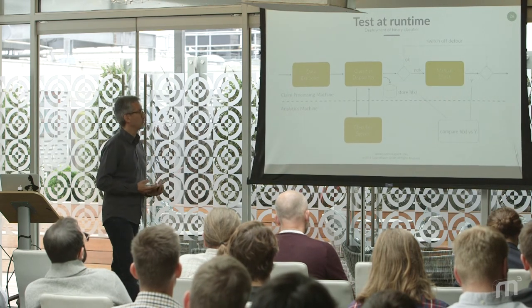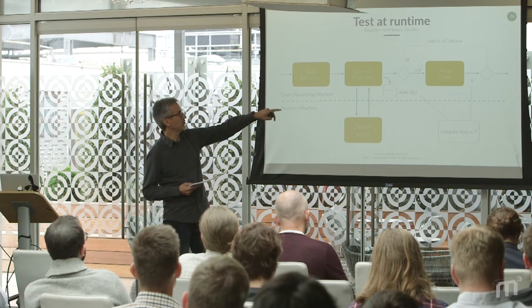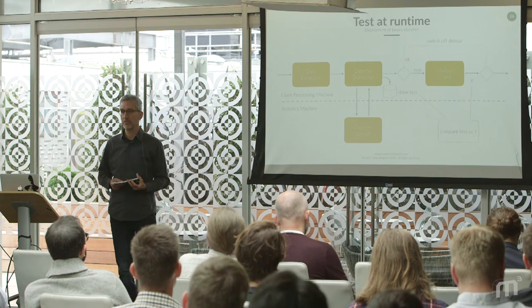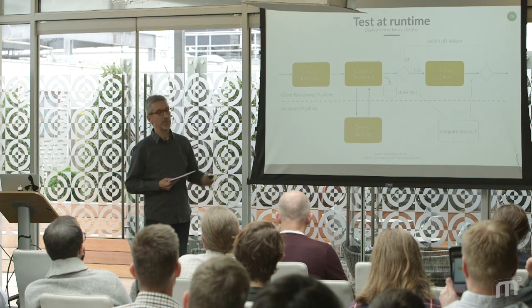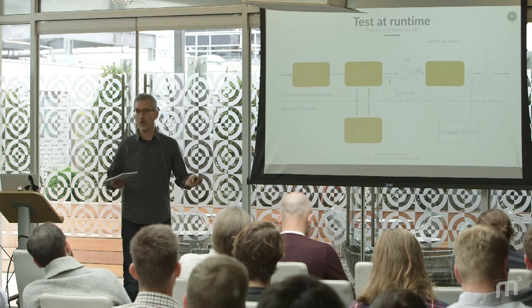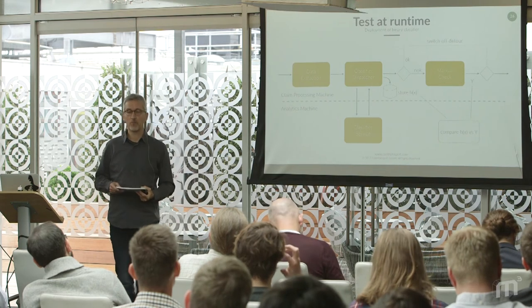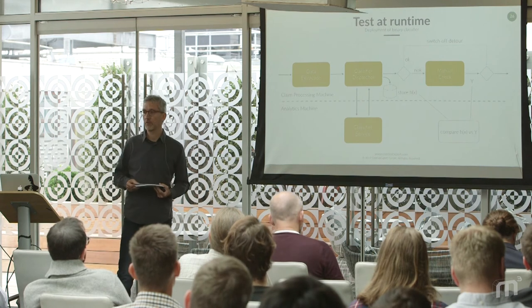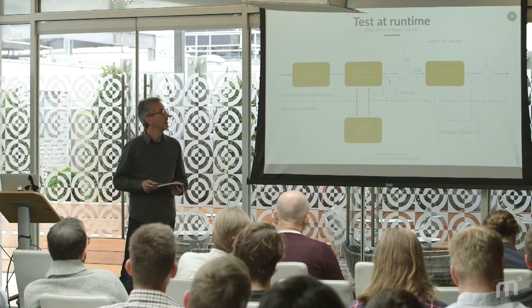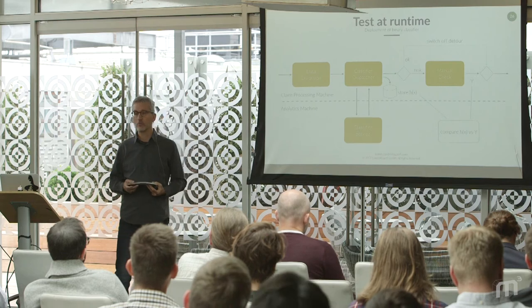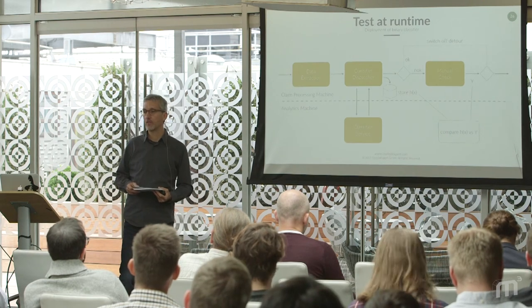Before putting shadow processing live, we decided to test the prediction at runtime. We switched off the detour around the manual check and stored predicted values in the database instead. We ran the workflow collecting predicted values and manual check values simultaneously. The result was that predicted values were completely wrong — the reason was I had used the wrong revision of the data. With a small fix applied, after a while the results were okay and we went live with our shadow processing, which has now been working for over a year, helping us improve our business process.